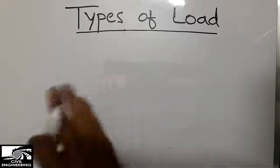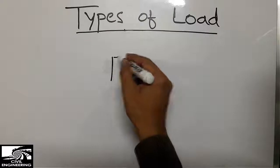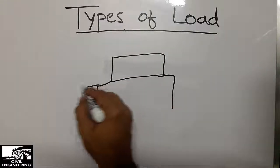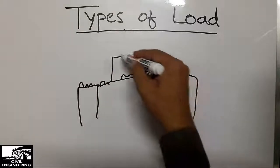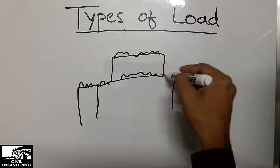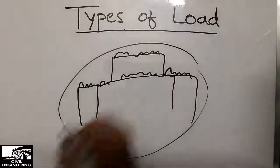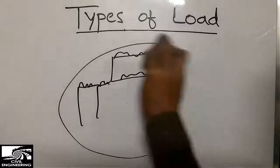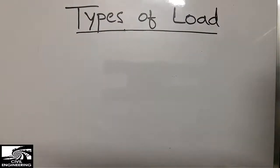In any structure, there is always a load acting on it. It may be a residential building, a frame structure, or anything else. The loads of people, the loads of cars, and the self-weight of the structure are always acting on these types of structures. So here we are going to classify what are the types of loads acting on a structure.